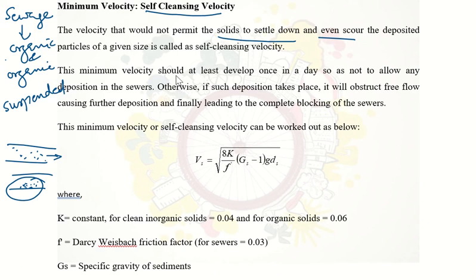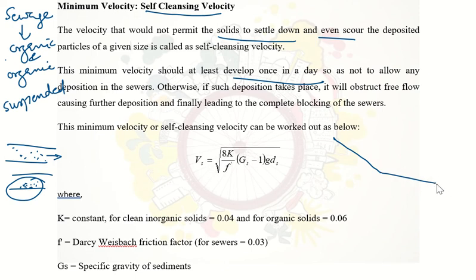The sewer should experience the self-cleansing velocity at least once in a day so that no deposition will occur or accumulate. This prevents blocking or clogging situations. At minimum discharge in hilly areas, the corresponding velocity is the self-cleansing velocity. In flat gradient areas, maximum discharge gives the corresponding self-cleansing velocity.